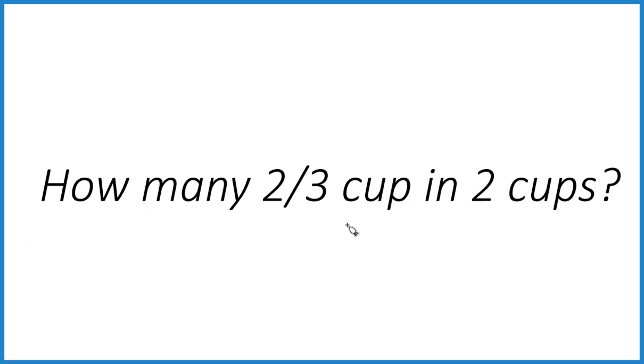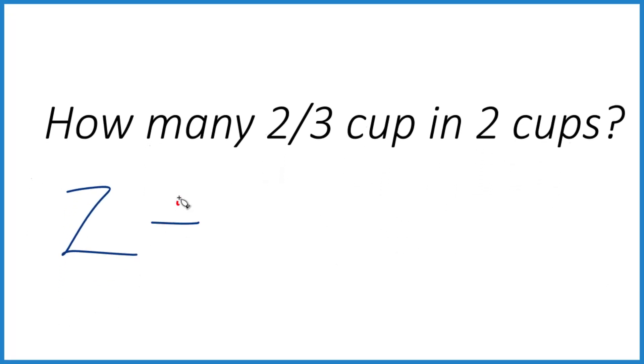And we know that two-thirds is less than one, so it's going to go into two more than two times. So let's figure it out. We have two cups, and we want to know how many times two-thirds goes into that. So two divided by two-thirds. That'll give us our answer.